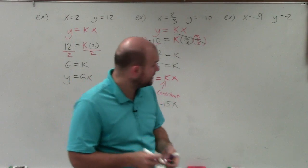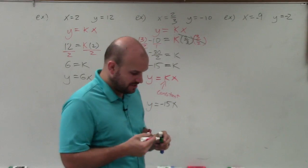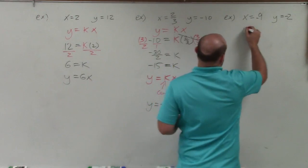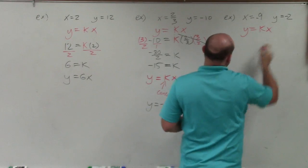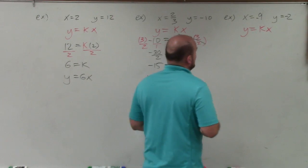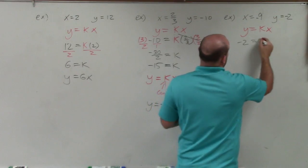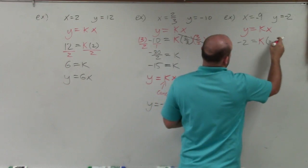OK, let's get into our last example here. Again, we just have some other x values. So we're just going to plug them in. So I have y equals kx. Again, we're given negative 9 and y. So I plug those in. So I do negative 2 is equal to k times negative 9.